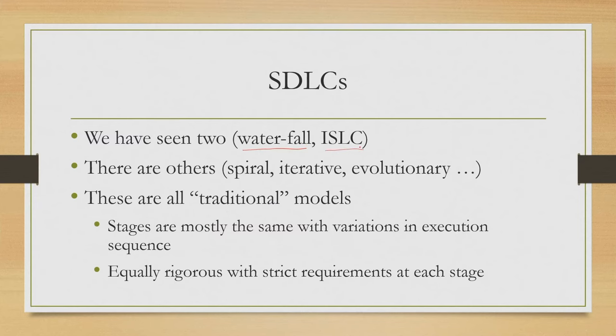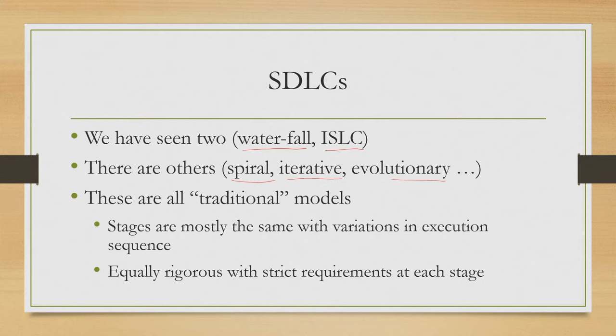In the early part of this course, we have learnt about the idea of software development life cycles, and also seen in detail two such life cycle models: the waterfall model and the interactive system development life cycle model. Apart from that, we have also briefly mentioned several other models including the spiral model, iterative model, evolutionary model, and so on. These are models of software development process — how the process should proceed in a stage-wise manner, with each model representing the whole development as a combination of stages performed in a particular sequence.